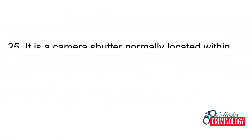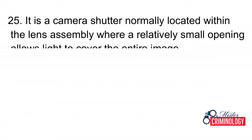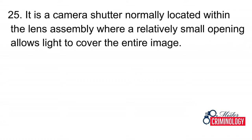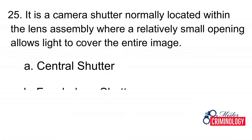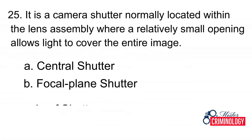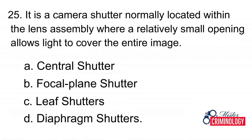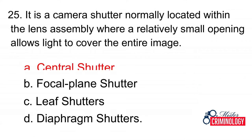Question 25: It is a camera shutter normally located within the lens assembly where a relatively small opening allows light to cover the entire image. A. Central shutter, B. Focal plane shutters, C. Leaf shutters, D. Diaphragm shutters. Answer: A. Central shutter.